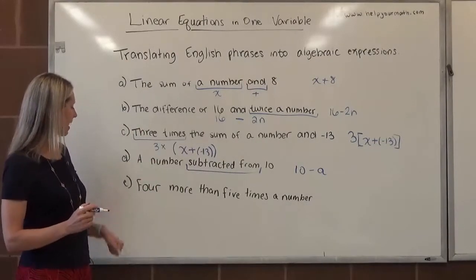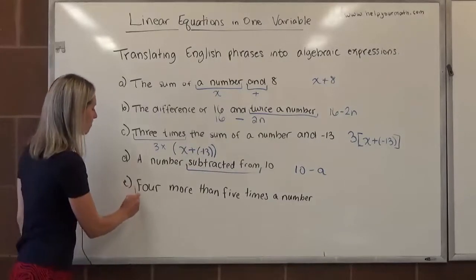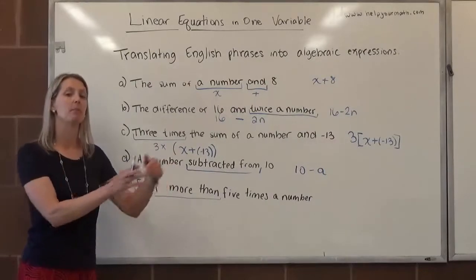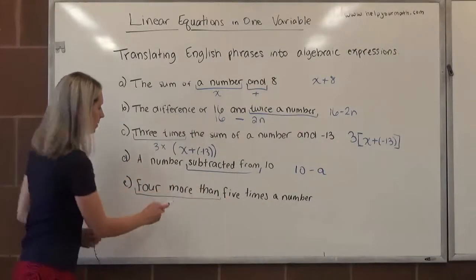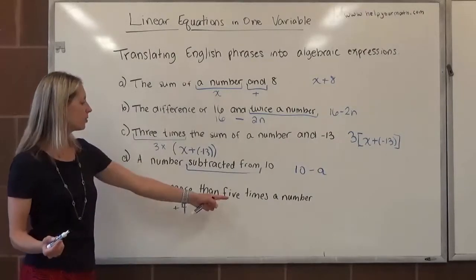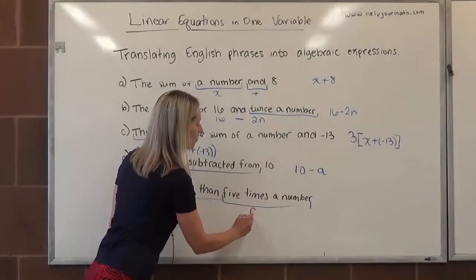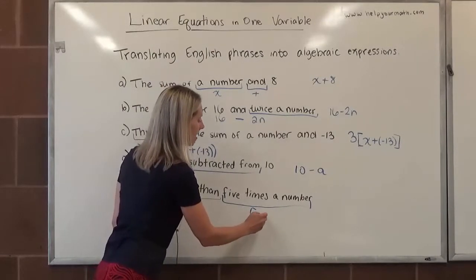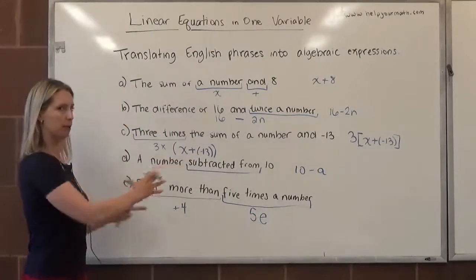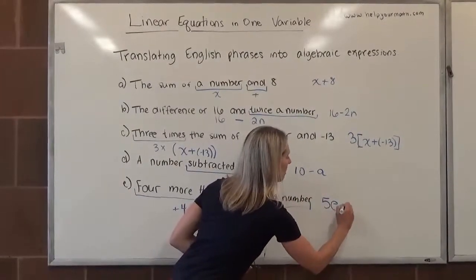Lastly here, we have four more than five times a number. Four more than, that indicates that we have something, and then we are going to add four to it. So this would indicate that it's going to be something plus four. What are we adding four to? Five times a number. We don't know which number, so we're going to say five times E. Putting this all together in the correct order would be five E plus four.